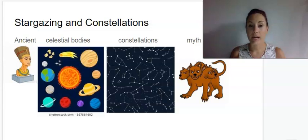The next one is celestial bodies. Say celestial bodies. This is any objects that are found in space, including planets, stars,